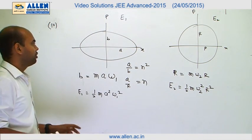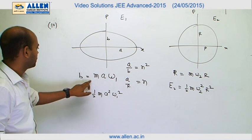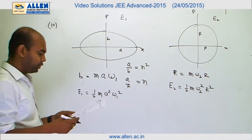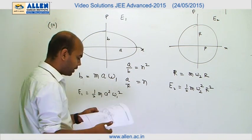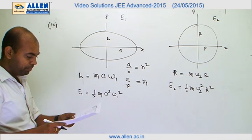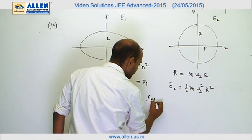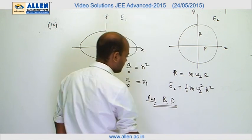Now it is a simple question of mathematical manipulation. You put the values and get the ratio, and we can definitely get the ratio of omega 1 to omega 2 and E1 to E2. By computing all of them, the answer to this question would be B and D.